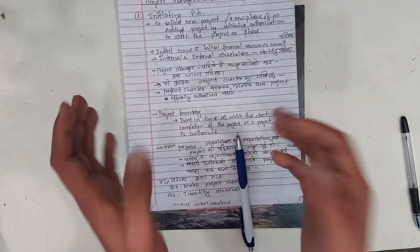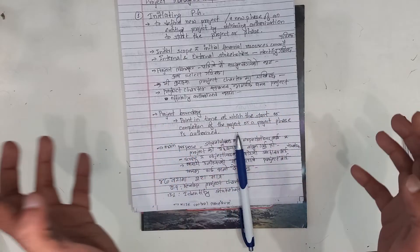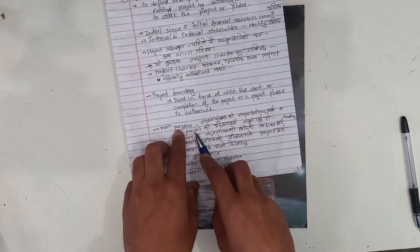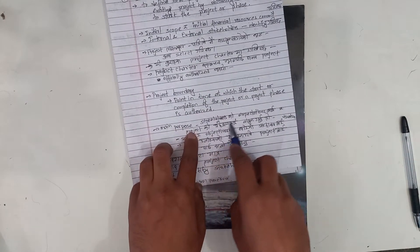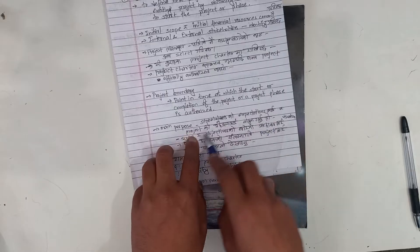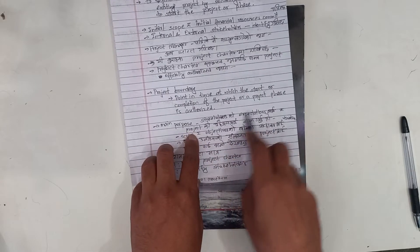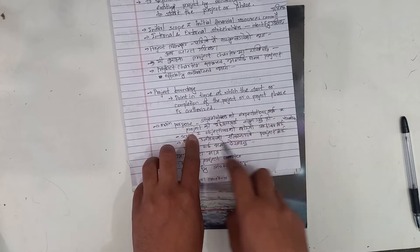What is the boundary? The main purpose is to align stakeholder expectations for the project and to visualize the project objectives within the initiating process group.